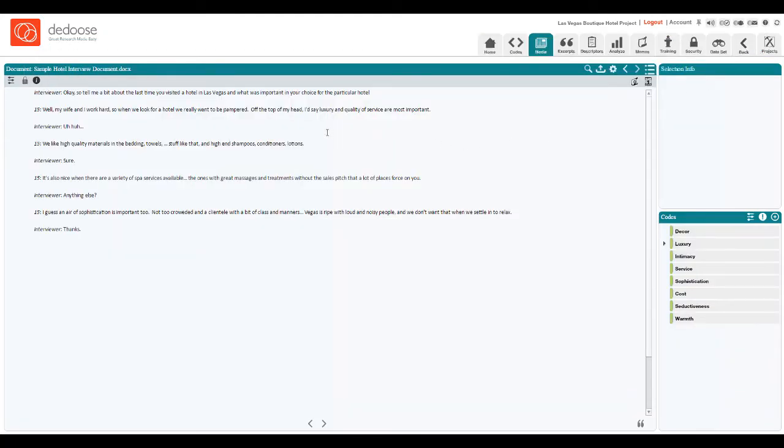Then I'm going to go through my document looking for content associated with the particular themes of interest in our study. So let's see. The interviewer asks about the decisions the last time somebody made a visit to a hotel in Las Vegas. This person says he and his wife look for being pampered and they say quality of service and luxury are really important to them. I'm going to create an excerpt out of that: luxury and service. That seems to be particularly important, so we'll give a weight of 8 out of 10 on that particular tag.